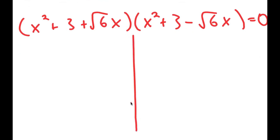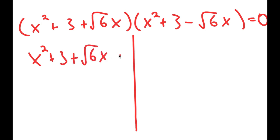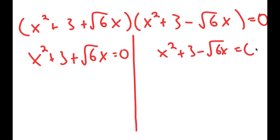So this gives me two equations: x squared plus 3 plus the square root of 6 times x equals 0, and x squared plus 3 minus the square root of 6 times x equals 0. For both of these, because they are quadratic equations, you can use the quadratic formula to solve them. I'm not going to do that in the video but you can try that yourself.